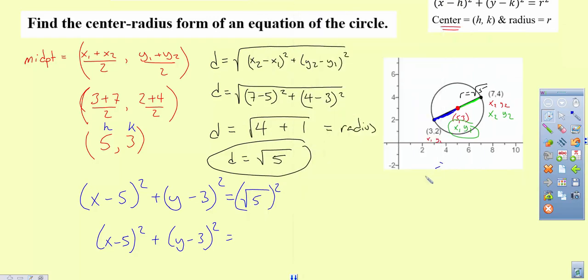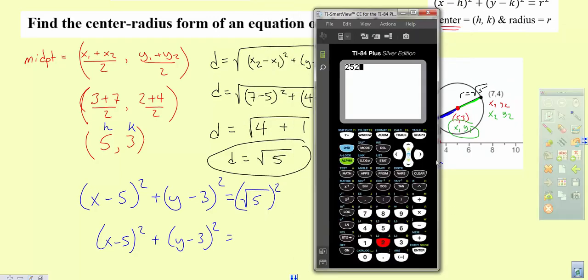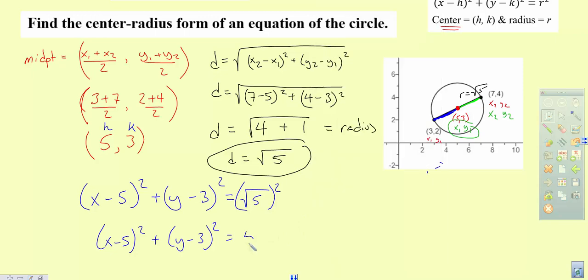When I take the square root of 5 and I square it, the square and the square root cancel, so my radius squared comes out to be just 5. So this is the equation of the circle that passes through the point 3, 2 and 7, 4.